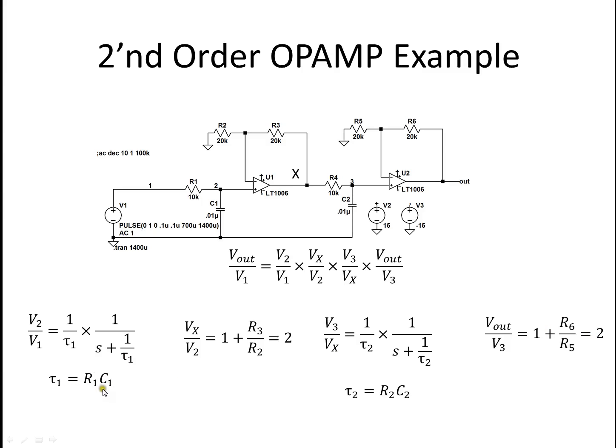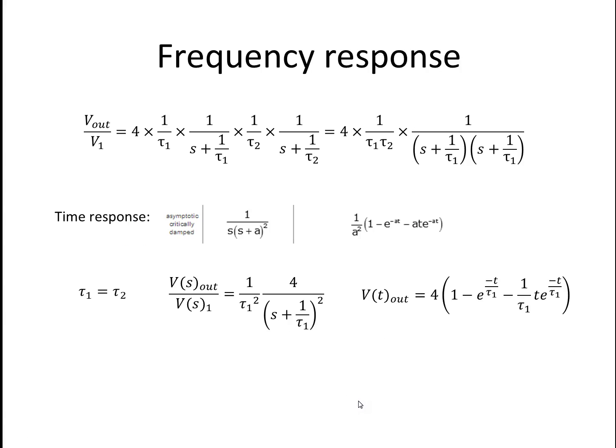In this case, τ1 equals R1C1. τ2 equals R2C2. Now, all we have to do is multiply that through for the frequency response, and everywhere there's an S, you put J2πf, and you can take the magnitude. And in the time response, we notice that we have an s times s plus a squared. Well, if we set τ1 equal to τ2, this equation reduces to 1 over τ1 squared plus s plus 1 over τ1 squared. So we make the appropriate substitutions, and we just get 4, and here's the time domain response.